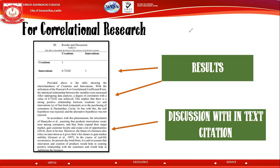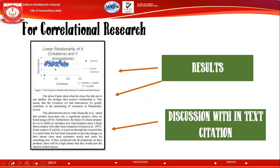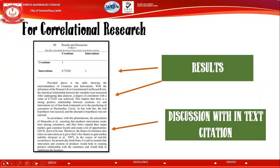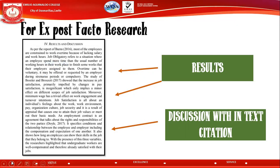In the result, interpret what the values mean, then provide the discussion with in-text citation. The graph addresses statement of the problem number one. In statement of the problem number two, you discuss the level of correlation — for example, what does a value of 0.72 mean? In this case, it means a strong positive correlation.